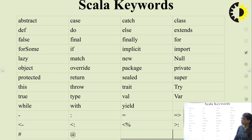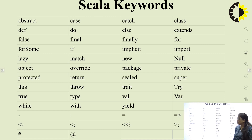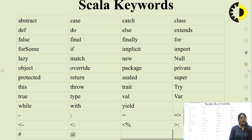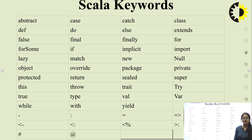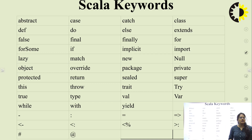Next is Scala keywords. The following list shows the reserved words in Scala. Reserved words may not be used as constants, variables, or any other identifier names. There are 52 Scala keywords, including: abstract, false, lazy, and others.